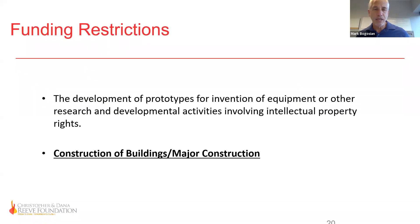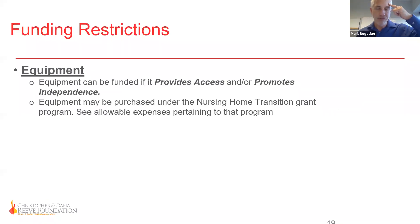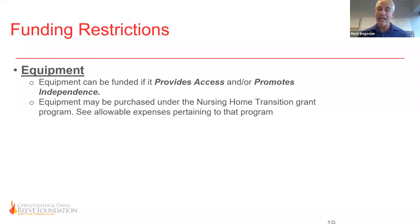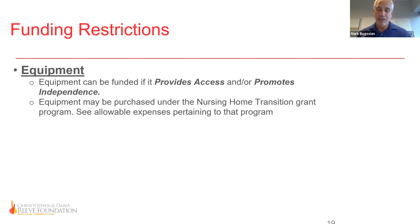Gym equipment that provides access is allowable; however, not gym equipment requiring a physical therapist or medical personnel on hand to guide users through therapy. Equipment may be purchased under the nursing home transition grants — I'll talk about that specifically. Another two things not allowable through our cooperative agreement are the development of prototypes for invention of equipment, anything involving intellectual property rights, and construction.